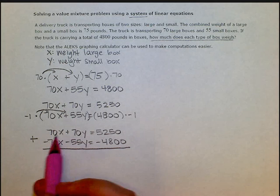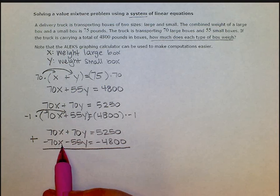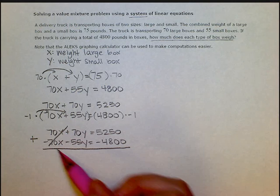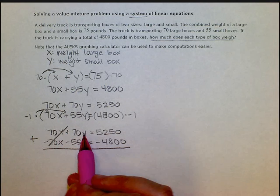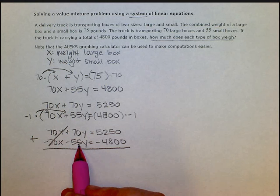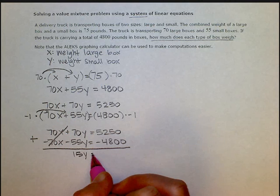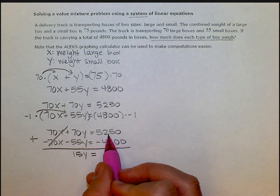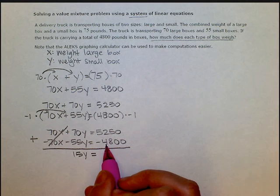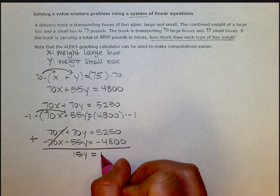70x plus a negative 70x is zero. Those cancel out. 70y plus a negative 55y is 15y. 5,250 plus a negative 4,800 is 450.